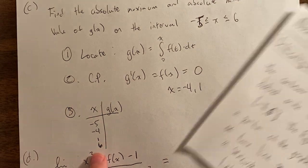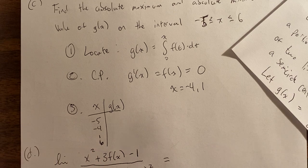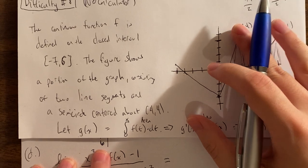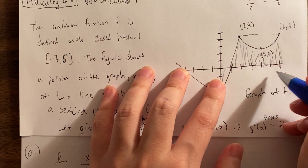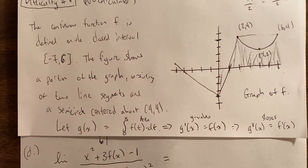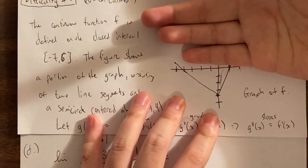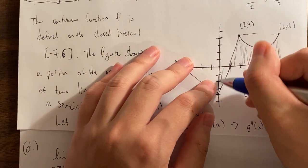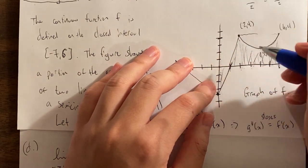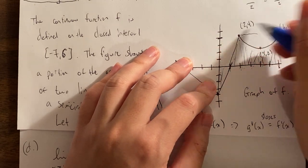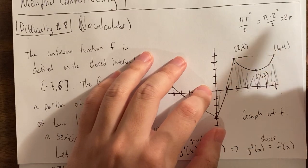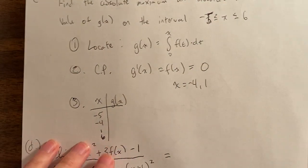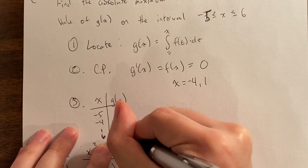We plug all these points into g of x, finding the area from 0 to that number. Starting with g of 6: we have the square situation — the area of the square was 16 (4 times 4), and we subtract the semicircle area of 2 pi. So g of 6 equals 16 minus 2 pi.